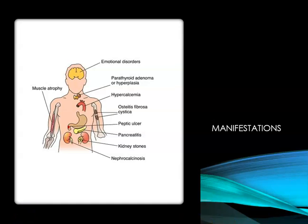This can result in muscle weakness and muscle atrophy, emotional disorders, dysrhythmias and hypertension, as well as GI effects such as abdominal pain, constipation, and anorexia. Patients may also experience kidney stones and polyuria due to renal tubule alterations.